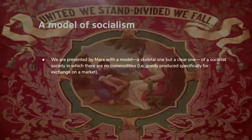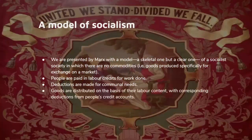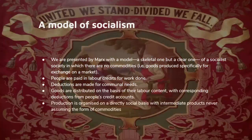This forms a model of socialism. Marx gives a skeletal model of a socialist society in which there are no commodities — that is to say, goods produced specifically for exchange on the market. People are paid by labour credits, deductions are made for communal needs, and goods are distributed on the basis of their labour content with corresponding deductions from people's credit accounts. Production is organised on a directly social basis, with intermediate products — that is, means of production — never assuming the form of commodities.